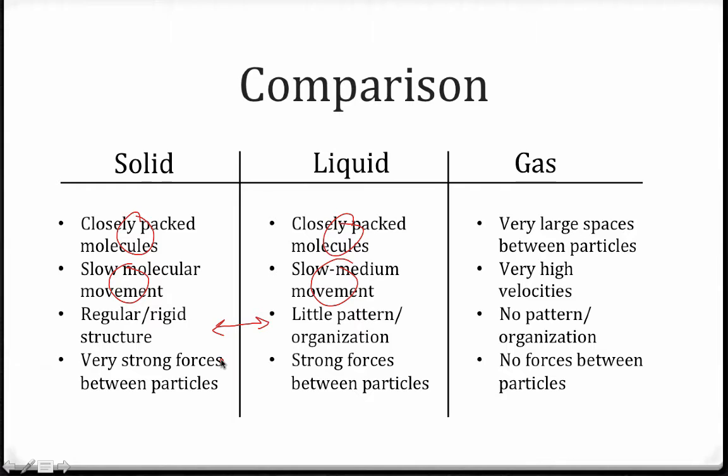We also see a relatively similar degree of forces holding solids and liquids together. As a result of this, I would draw a separating line here in this table and talk about how solids and liquids, from a standpoint of properties, are very similar to one another, whereas our third state of mass, or state of matter, gases, are very different. Gases have very large spaces separating them, which makes them very different than the other substances. Very high velocities, whereas solids and liquids tend to move much slower. No pattern or organization, and no forces holding it together. Because of this, we'll talk about gases in this chapter as a separate entity, and we'll talk about solids and liquids together.